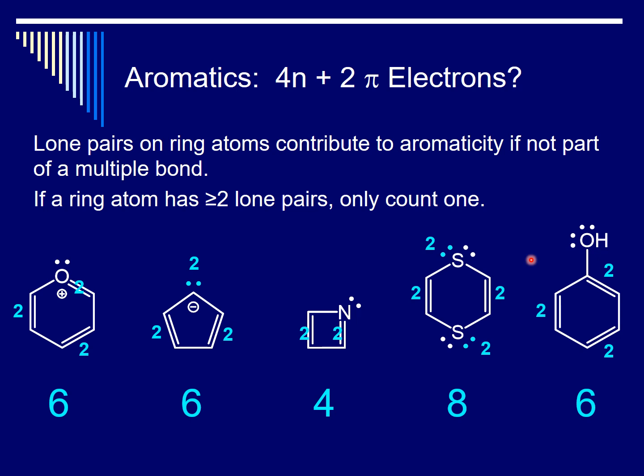Now we can determine which of these is aromatic. Clearly, it's the first, second, and fifth, since they have a Hückel number of pi electrons.